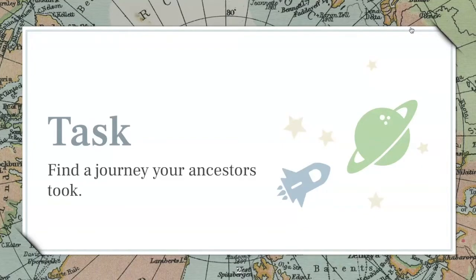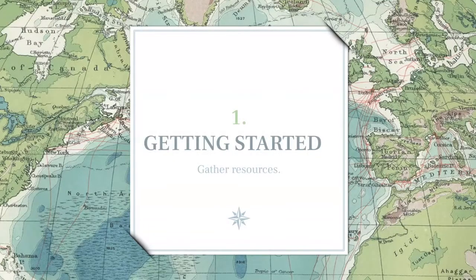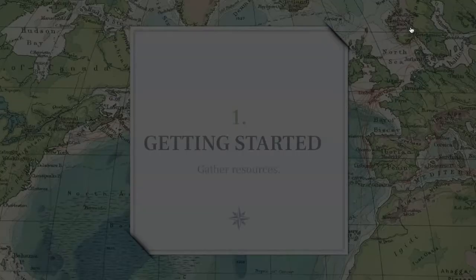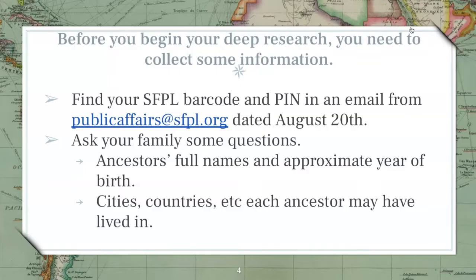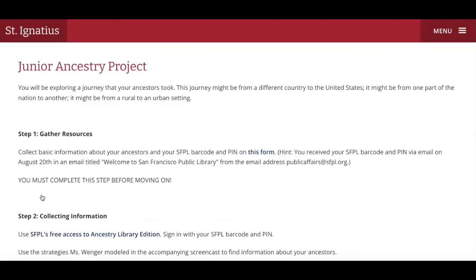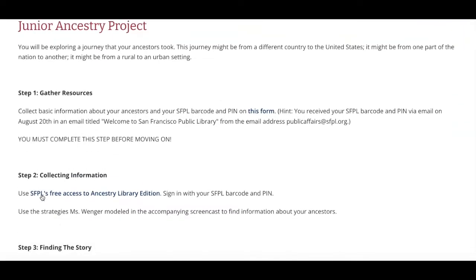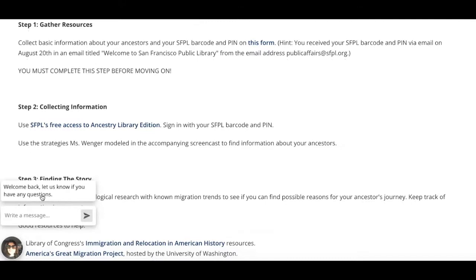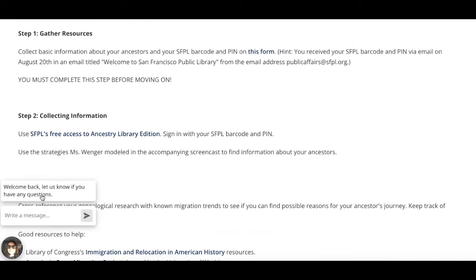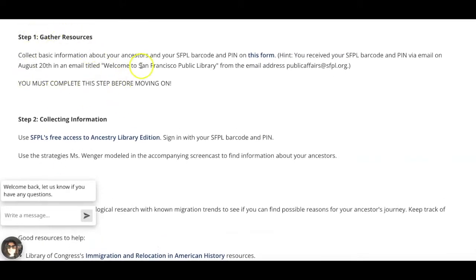This project asks you to find a journey your ancestors took. To get started, you'll need to gather some resources: your SFPL barcode and pin, and you will need to ask your family some questions about an ancestor, preferably a grandparent or several grandparents. The more grandparents you collect information about, the easier it will be.